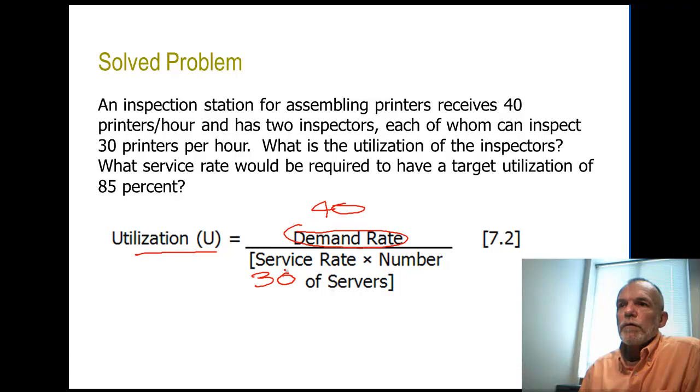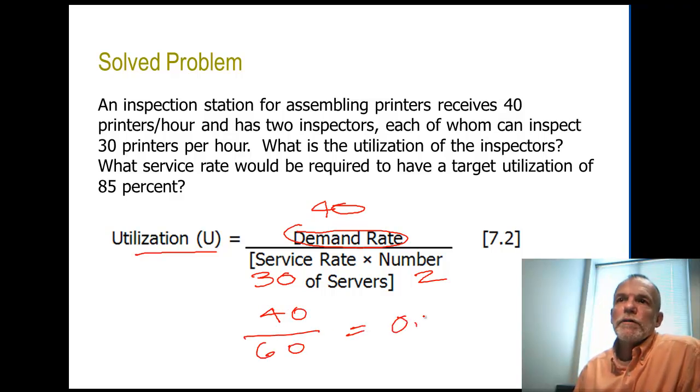So we'll have 40 divided by 60 or about 0.67, so a 67 percent utilization. Utilization is the average percent of time that a resource is busy. So these resources would be busy on average 67 percent of the time.